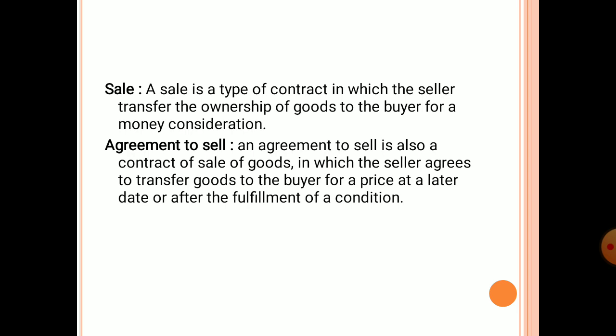In an agreement to sell, the performance of the contract is done at a future date, i.e., when the time elapses or when the necessary conditions are satisfied. After the contract is executed, it becomes a valid sale. All the necessary conditions required at the time of sale should exist in the case of an agreement to sell.